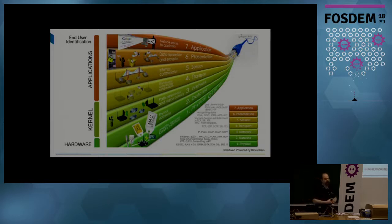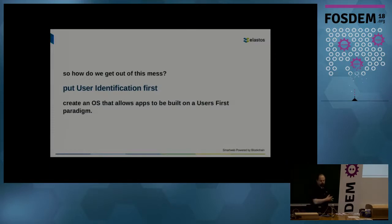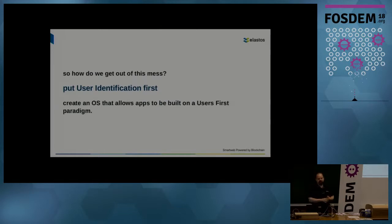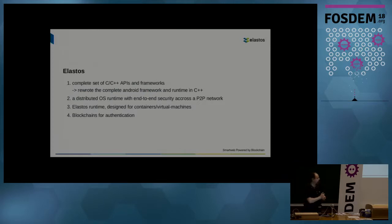There are guesses about how to detect spam, but these are just guesses, and sometimes those guesses are wrong. The only person really sure is the recipient. So how do we get out of this mess? The idea is we put user identification first — we create an operating system that allows apps to be built on a user-first paradigm for communication, so that applications don't open their own internet connections but let the OS deal with that. This is where Elastos comes in.